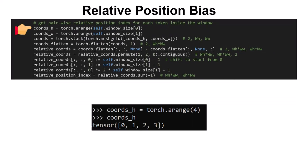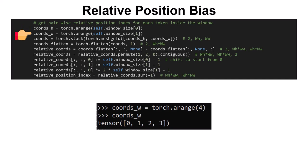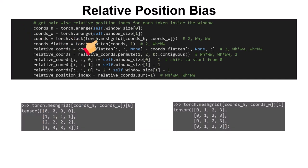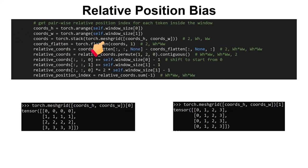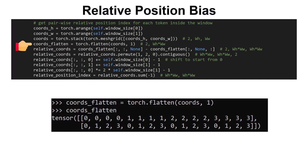If we look further inside the init function, we can see these lines of code that construct the relative_position_index. In the first line, the height coordinates are created. Assuming the window size is m×m with m=4, by applying torch.arange(4), the height coordinates are 0 to 3. Similarly, the width coordinates are again 0 to 3. Then by applying torch.meshgrid, we get these tensors. Stacking them together and flattening gives us coordinates where the first column is (0,0), the second is (0,1), then (0,2), (0,3), (1,0), and so on. So coords_flatten, with each column representing a coordinate in our coordinate system.